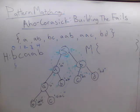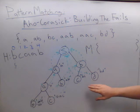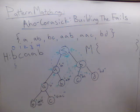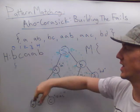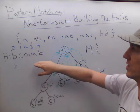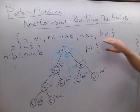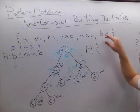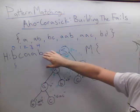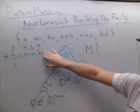Once we have the tree built and all of the fail relationships set, we can look at a haystack string. What we're going to do is find every instance of each of the words inside the dictionary inside the haystack string, and we're going to do that in linear time.